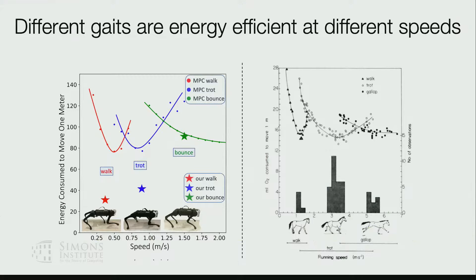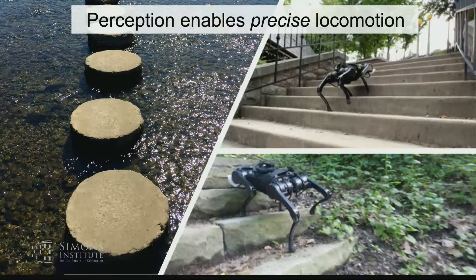If you give it a higher desired speed, the footfall pattern changes. At an even higher desired velocity, different gaits emerge. I would count this as a genuine emergence phenomenon, and there's a simple explanation: people in biomechanics knew that at low speeds, walking is more energy efficient, and at high speeds, running is more efficient. For a horse there are a variety of gaits. And that's what emerged here.